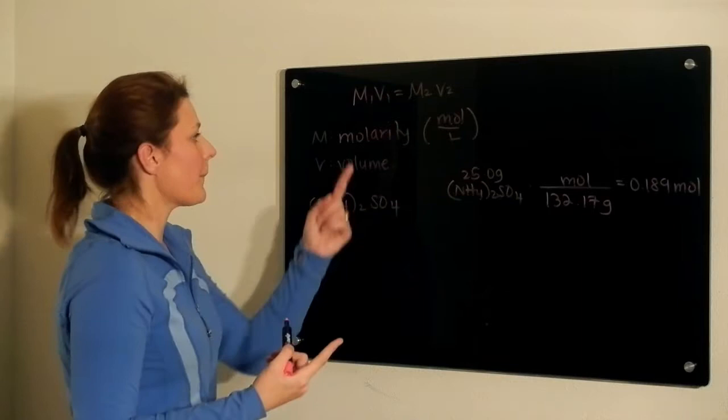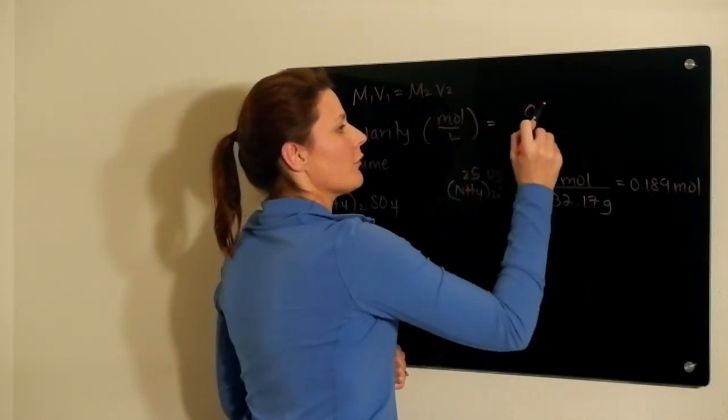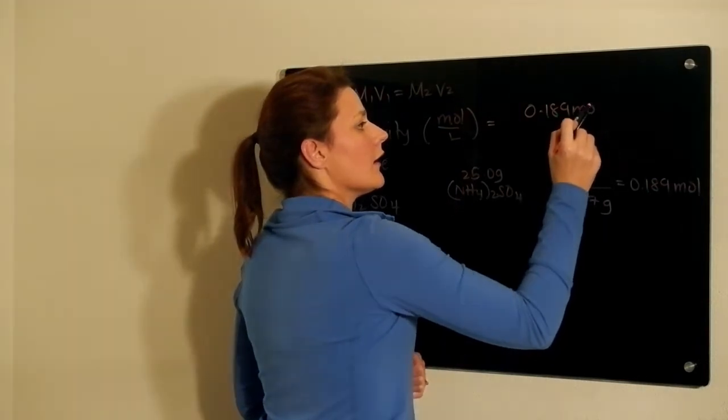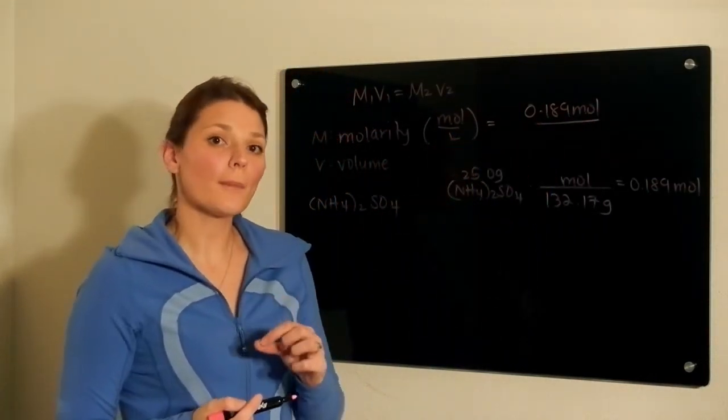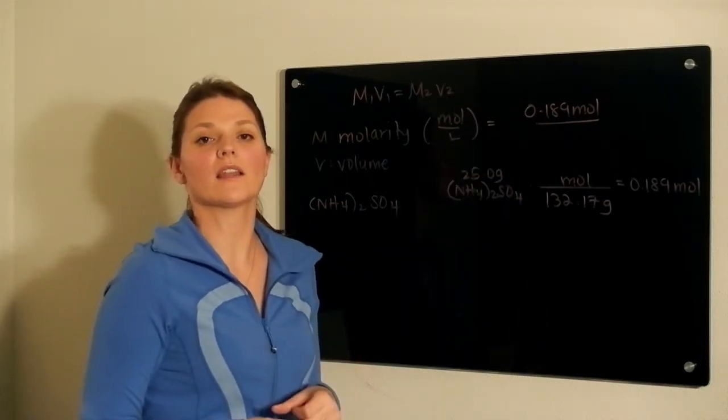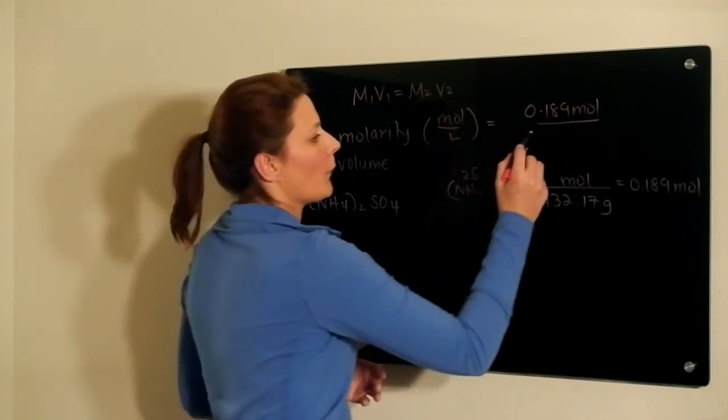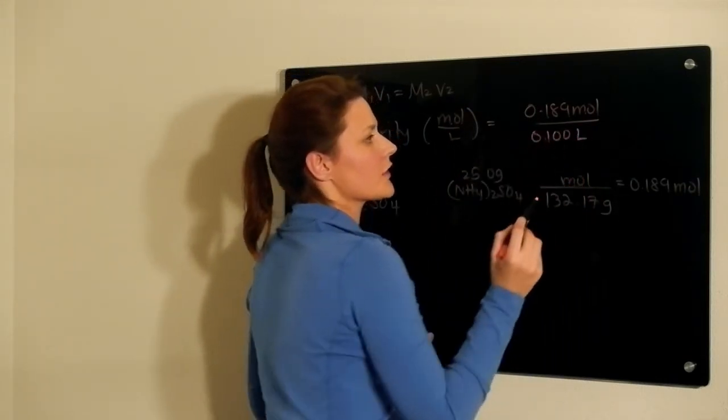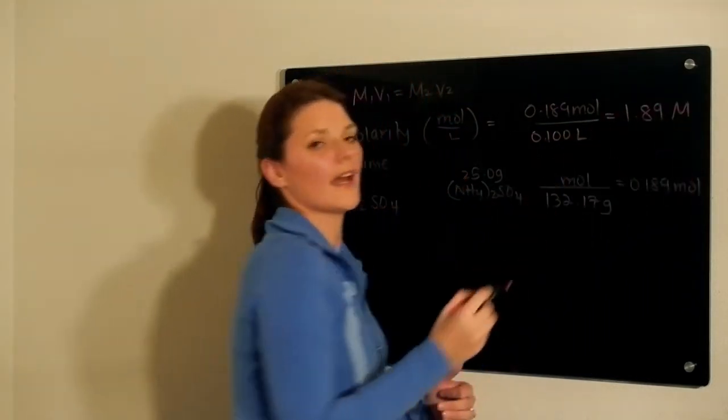We have one more step as we are still trying to get molarity, which would be the initial number of moles divided by the liters of solution. Read the problem carefully. In the first case, we're taking this many moles and dissolving it in 0.1 or 100 milliliters of water, or 0.1 liters, which means the initial concentration is 1.89 molar.